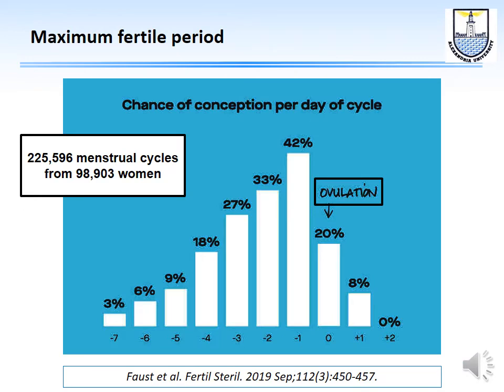Regarding the maximum fertile period: the best time for conception is actually one day before ovulation, then two days before, then three days before, then the day of ovulation itself, then four days before. This was confirmed by a study by Festa-Bianchet published in 2019, conducted on 225,000 cycles from 98,000 women using devices that detect when ovulation will occur.